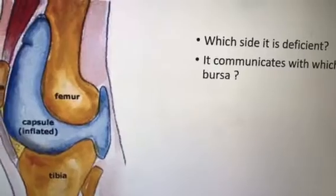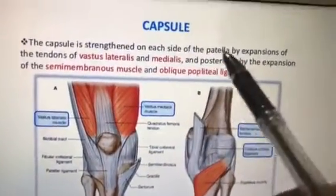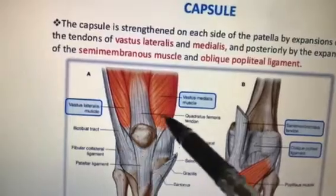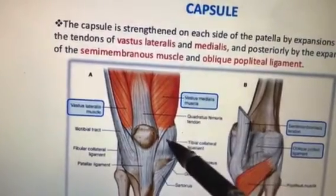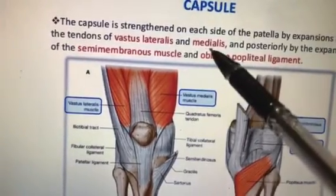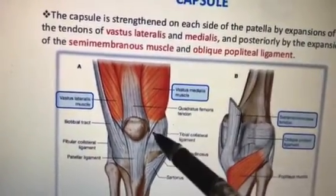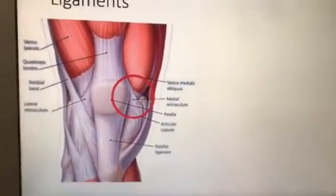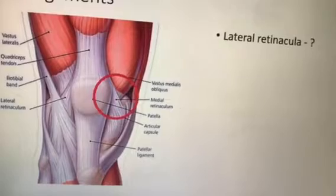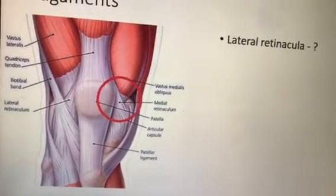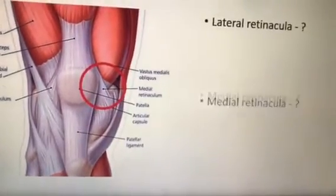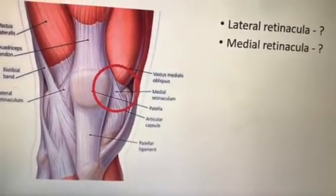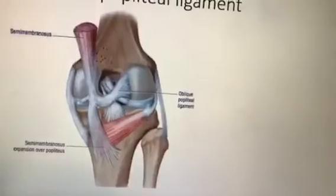The capsule is supported on each side by the retinacula. What is retinacula? The lateral retinacula is the extension of the vastus lateralis, and the medial retinacula is the extension of the vastus medialis — both are muscles of the anterior compartment of the thigh. Posteriorly, it is supported by the oblique popliteal ligament, which is the expansion of the semimembranosus tendon.